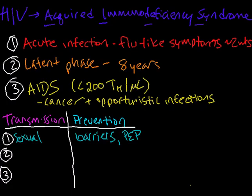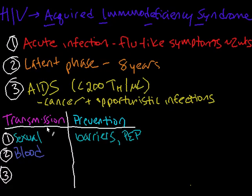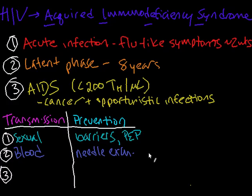The next way HIV can be transmitted is through blood contact. People who share needles, like IV drug users, can acquire it from each other. Healthcare personnel getting stuck by a needle when caring for an HIV-positive patient can also get the infection. People can also get it through blood transfusions, although this is much less common now that we can check the blood supply for HIV. For IV drug users specifically, there's something called a needle exchange, where people trade in used needles for clean ones, which is really effective at preventing transmission. And again, PEP is also an option.